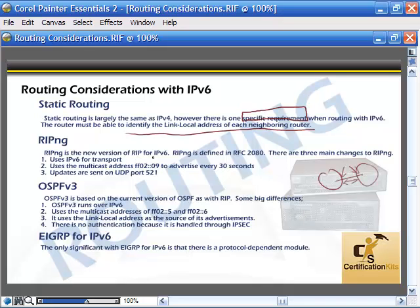RIPng is the new version of RIP for IPv6, RFC 2080. There are three main changes: it uses IPv6 for transport; it uses multicast address FF02::9 to advertise every 30 seconds; and updates are sent on UDP port 521.